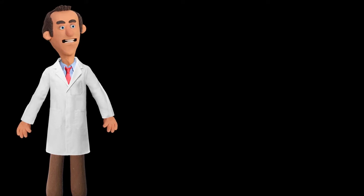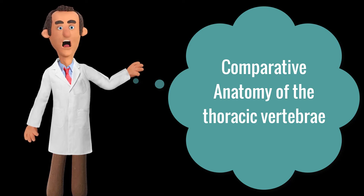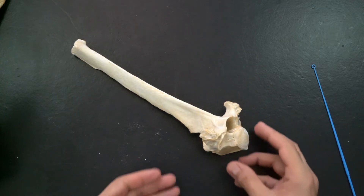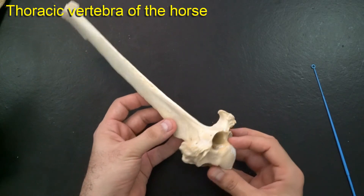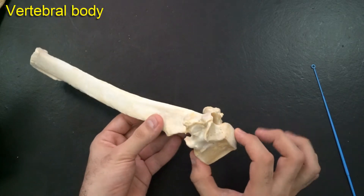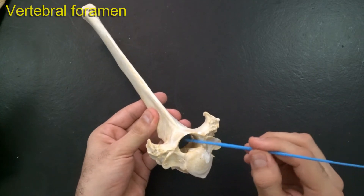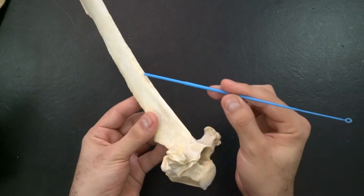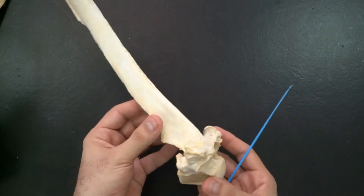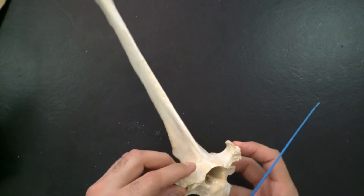In this video we will talk about the thoracic vertebra. We will start with the general features of the thoracic vertebra and after that we will look at the comparative anatomy between different animal species. Starting with the thoracic vertebra of the horse, it has the same general features as other vertebrae: a body, a dorsal arch, and the vertebral foramen formed together by the dorsal arch and body, along with various processes including the spinous process, transverse processes, and articular processes.